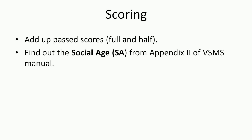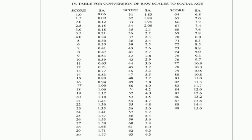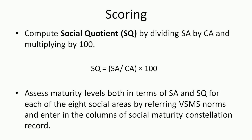Next is scoring — how to score the responses. Add up all past scores, both full and half credits, then find out the social age (SA) from Appendix 2 of the VSMS manual. For example, if the total score is 30, the corresponding social age is 1.77; for a score of 40, the social age is 2.6. Use this social age to calculate the social quotient by dividing social age by chronological age and multiplying by 100. Then assess the maturity level in terms of social age and social quotient for each of the eight social areas by referring to VSMS norms and entering results in the social maturity constellation record.